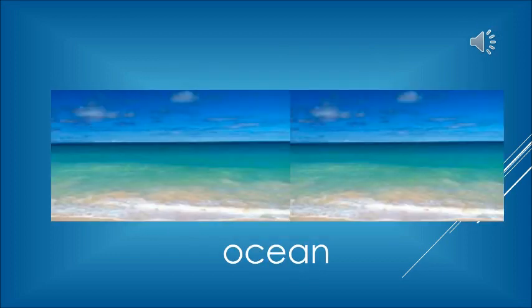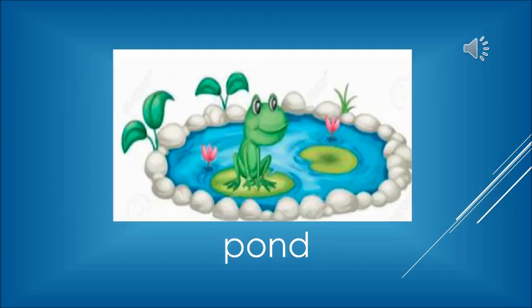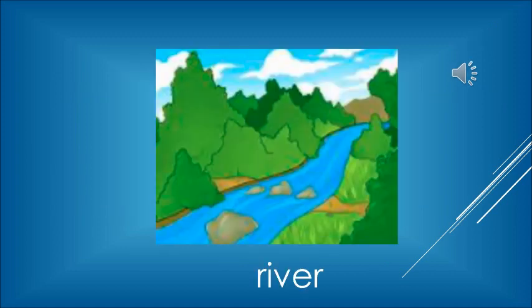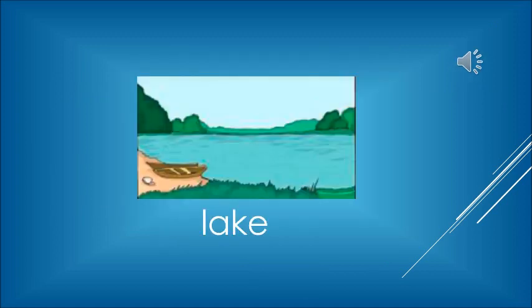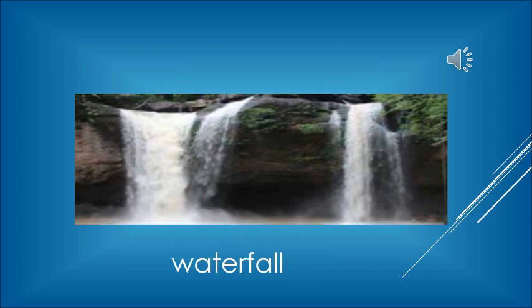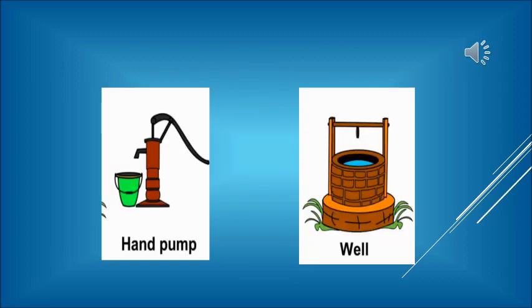Now the other sources of water — other ways in which we get water — are oceans and seas, then we have ponds, rivers, lakes, waterfalls, and even the taps, hand pumps, and wells. So these are the different sources of water which we have.